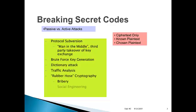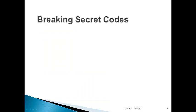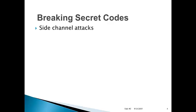So-called rubber hose cryptography — beating the cryptography out of the individual using methods of physical force or persuasion. Now, different ways of breaking secret codes that are talked about within the book itself.